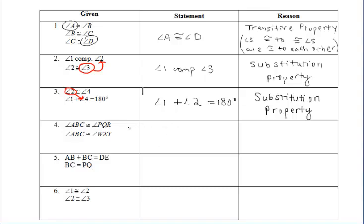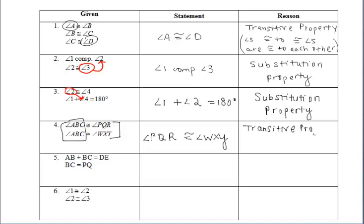In example four, we have some congruent angles. We know that angle ABC is congruent to angle PQR, and angle ABC is congruent to angle WXY. Both angles PQR and WXY are congruent to angle ABC, which means they have to be congruent to each other. So angle PQR is congruent to angle WXY, and the reason is the transitive property. What we have going on here is two angles that are congruent to the same angle, which means those angles are congruent to each other.